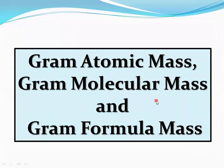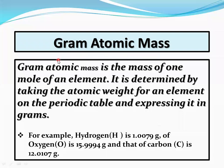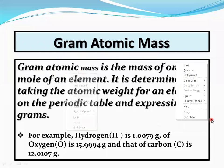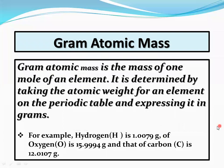Gram atomic mass is the mass of one mole of an element. It is determined by taking the atomic weight of an element from the periodic table and expressing it in grams instead of AMU. For example, hydrogen is 1.0079 grams, oxygen is 15.9994 grams, and carbon is 12.011 grams. In gram atomic mass, we simply place grams instead of AMU.